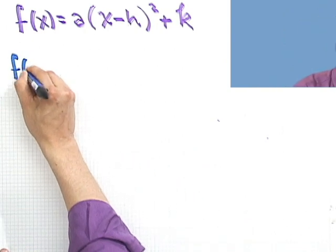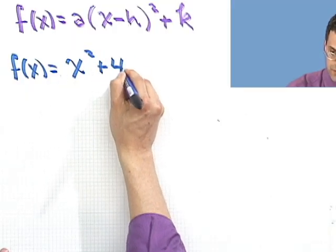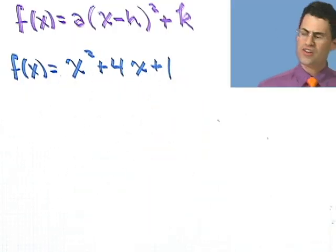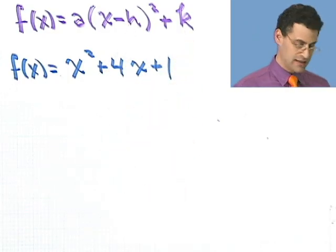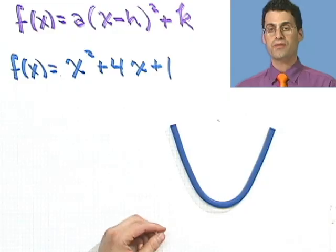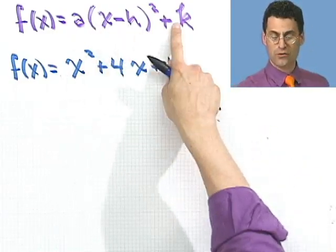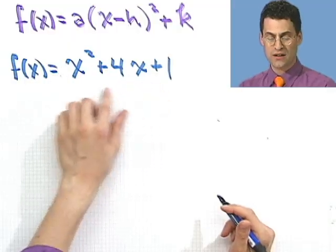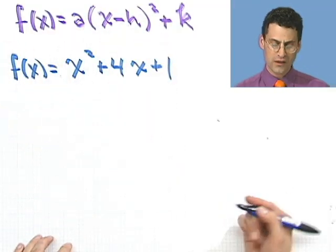Suppose someone gave you the following function, f(x) equals x squared plus 4x plus 1. Sort of hard to read off the h and the k that make up the vertex, right, that bottom point right there of the parabola. So how could you find it? Well, you could find it by writing this in this form by completing the square. You have sort of part of a square. Want to add the other part to make it a perfect square. So what would I do?